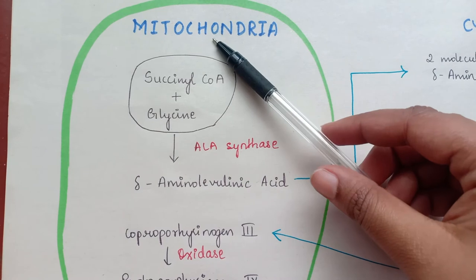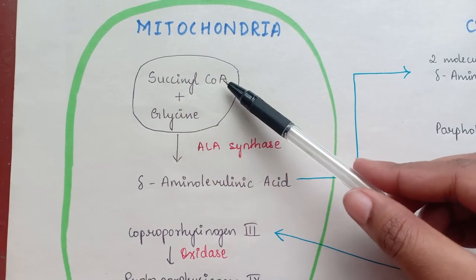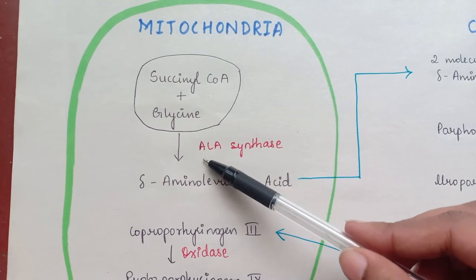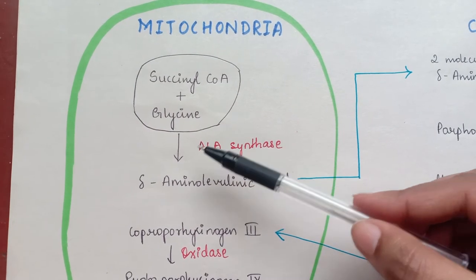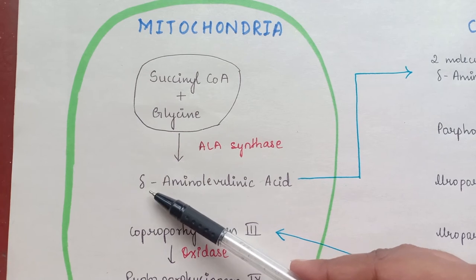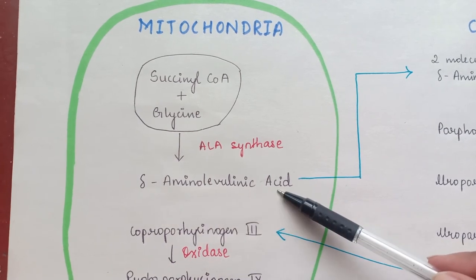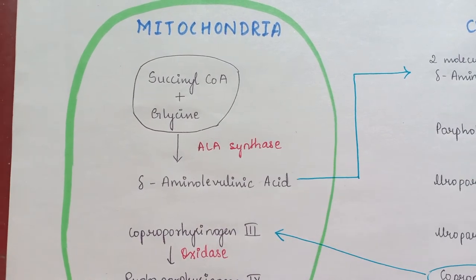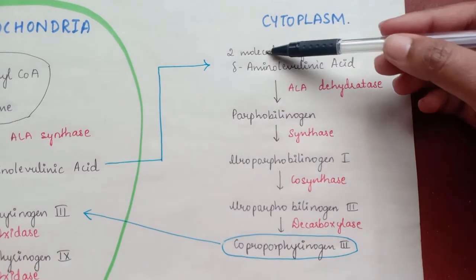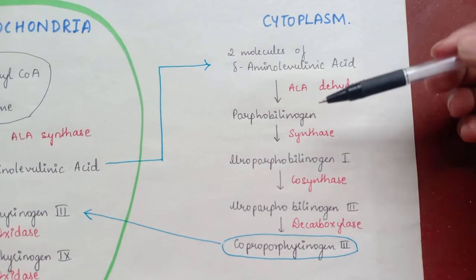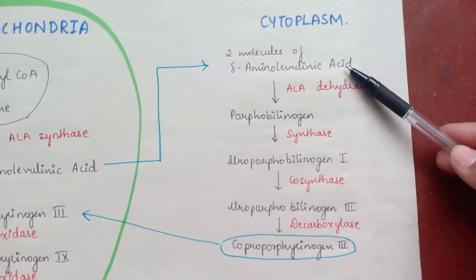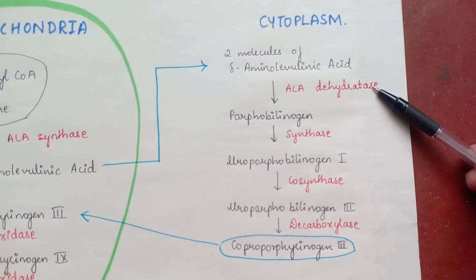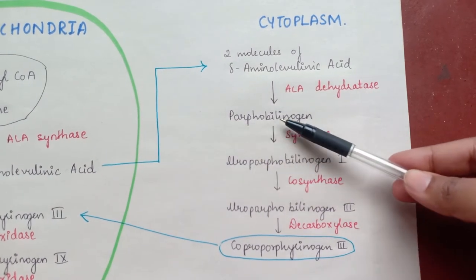Synthesis of hemoglobin mainly takes place in the mitochondria and cytoplasm. In the mitochondria, two molecules of succinyl-CoA and two molecules of glycine in the presence of ALA synthetase form delta-aminolevulinic acid. This is the first by-product in the formation of heme.